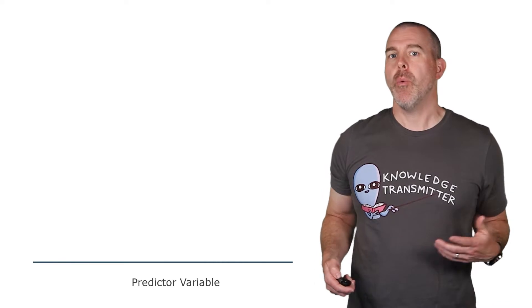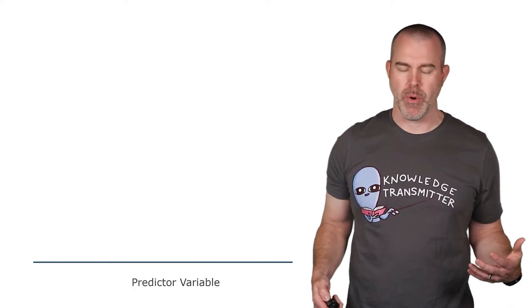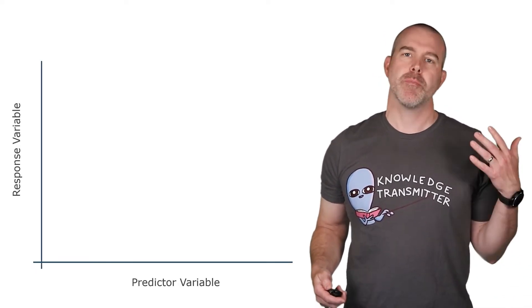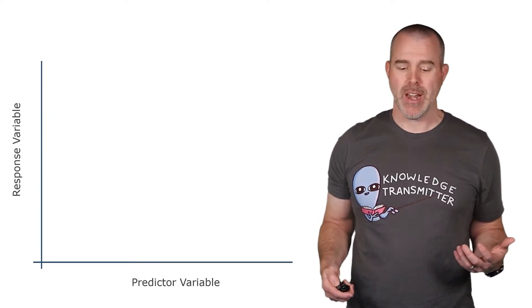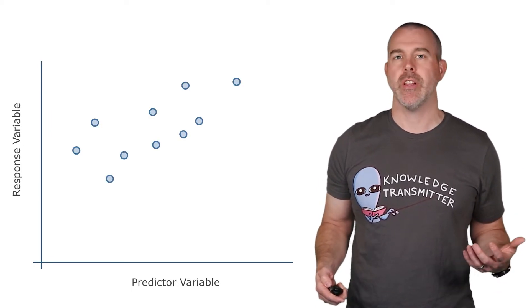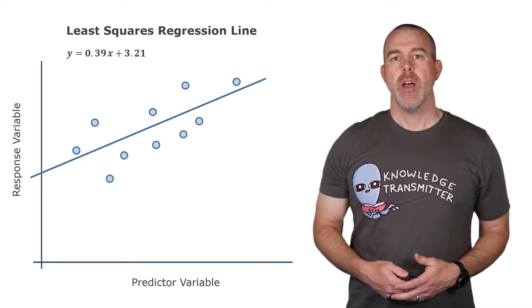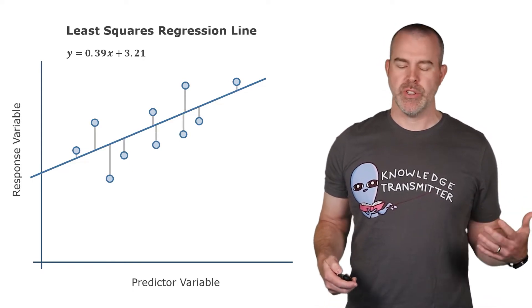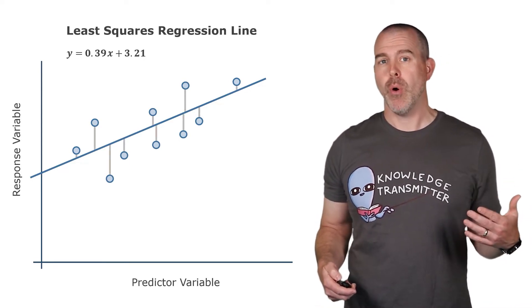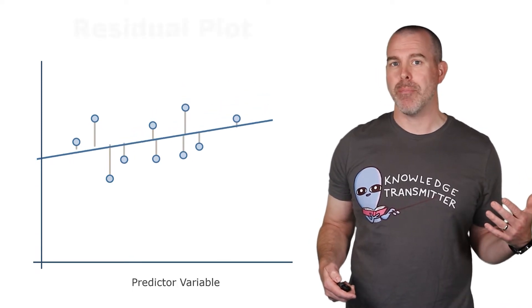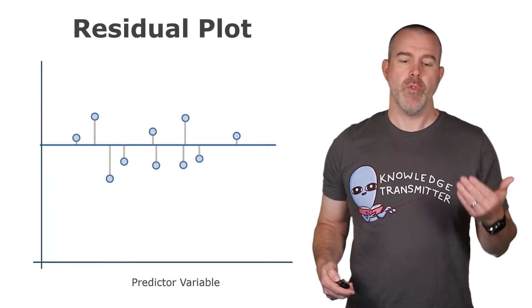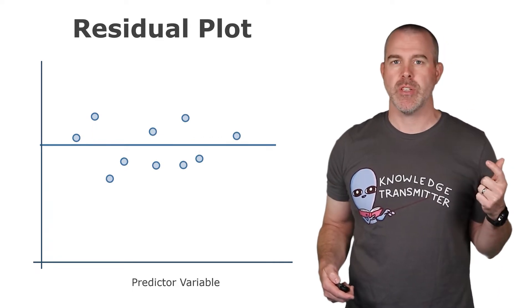We're going to start this video learning about a new plot and how it can help us analyze whether a linear model is appropriate for a given set of data. We already have our scatter plot where we have the predictor variable on the horizontal and the response variable as the y. What we want to do now is focus on those residuals and instead of making a plot of the points we instead make a plot of the residuals.